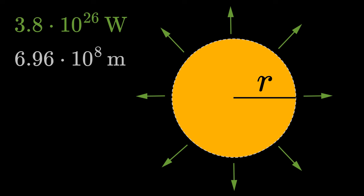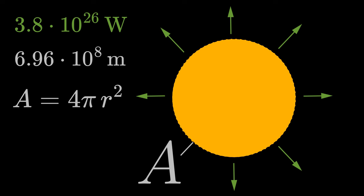We can therefore use the formula for the surface area of a sphere to determine the surface area of the sun. A equals 4 pi times r squared.